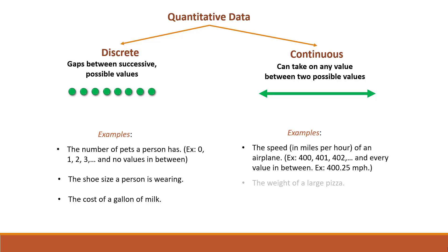Following the same idea, we can see why the weight of a large pizza would be continuous quantitative data and the temperature in degrees Fahrenheit of a person. No matter which two values you give me, I can always find a decimal that would fit in between. So these are the examples of continuous quantitative data.